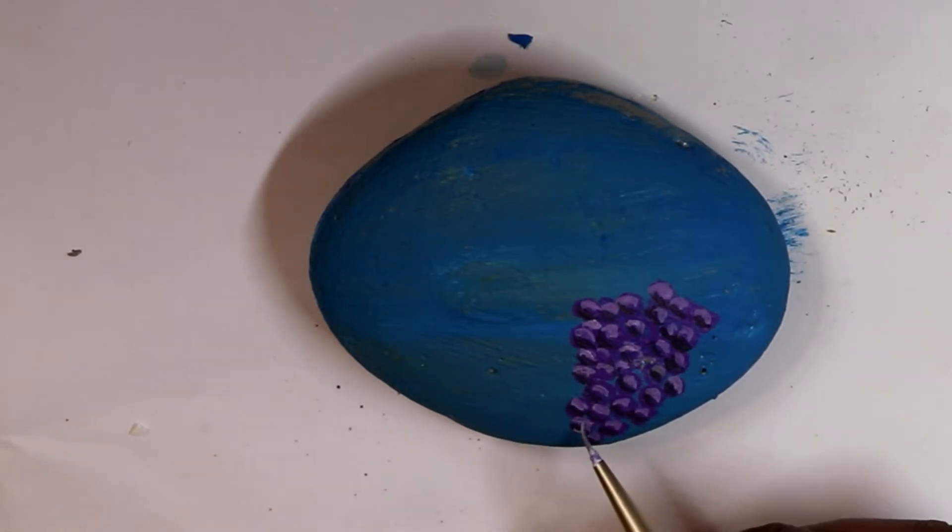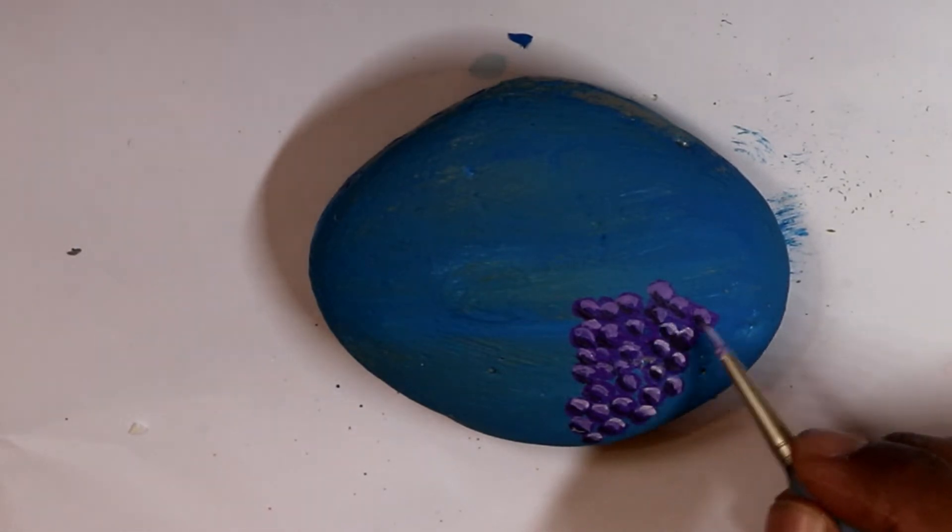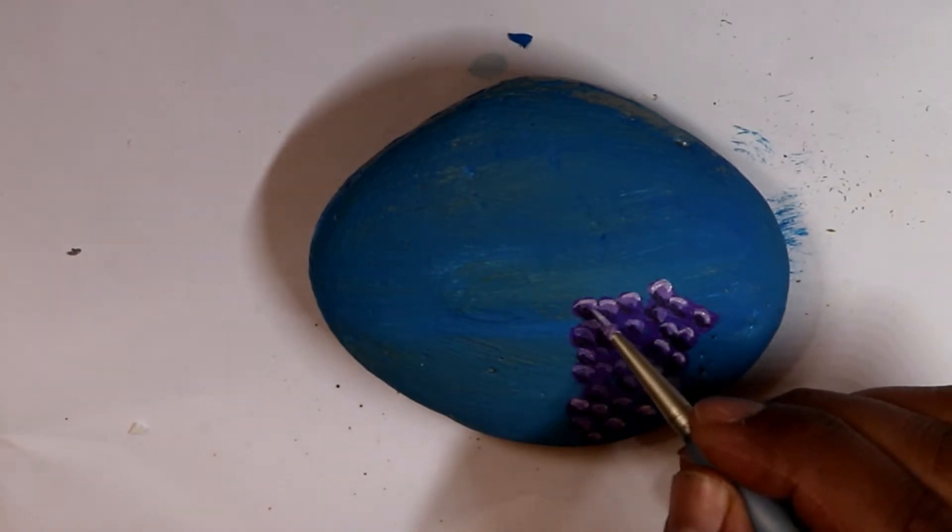Then you add a little bit more white on the grapes. You just do this with a small brush. It doesn't have to be exactly the same grapes that I did.